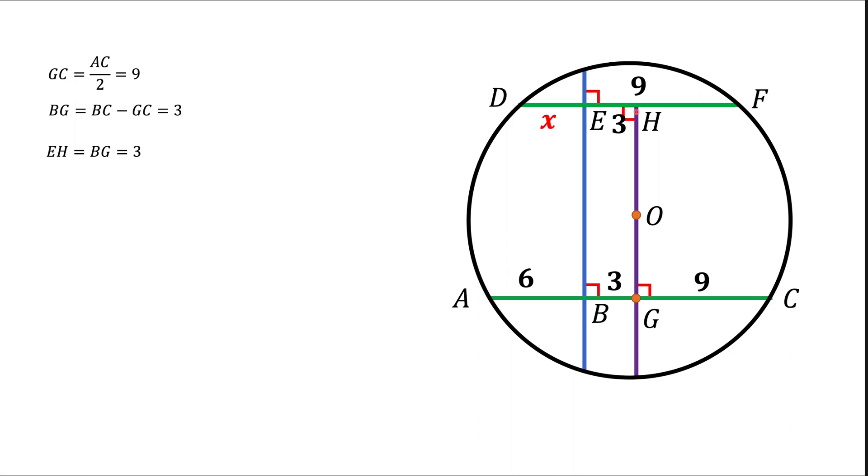And that means that HF should be 6. But now remember that GH is the line that's perpendicular to DF, to the chord DF, and we have the center of the circle O lying on that purple line.